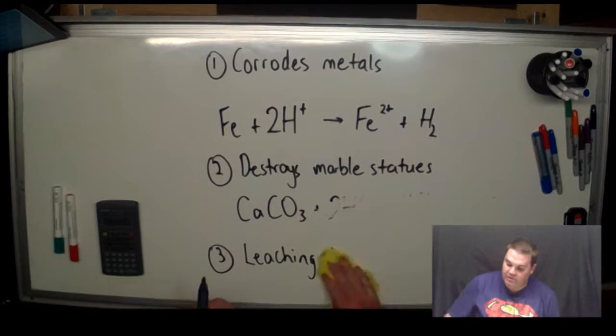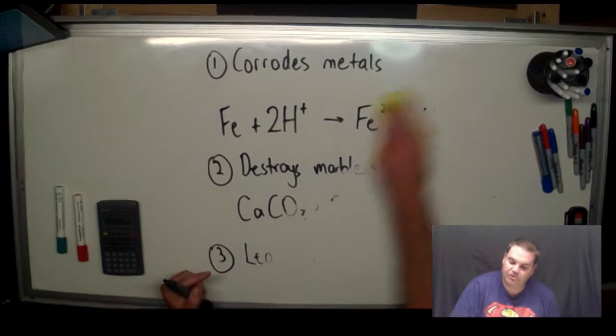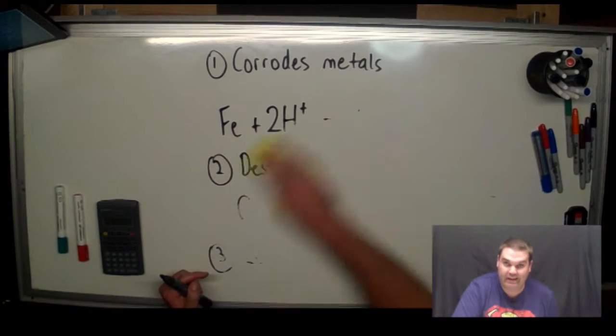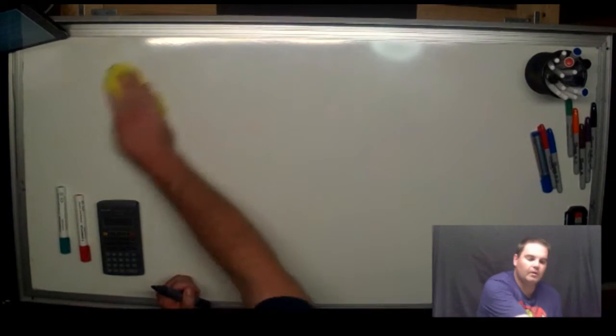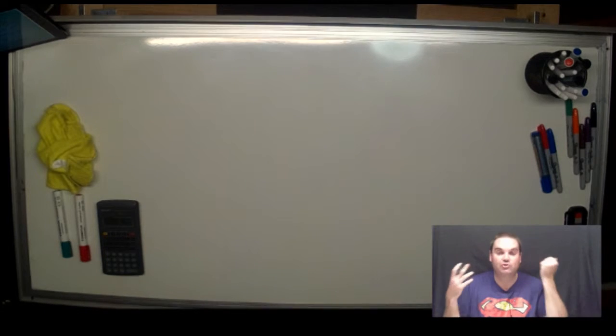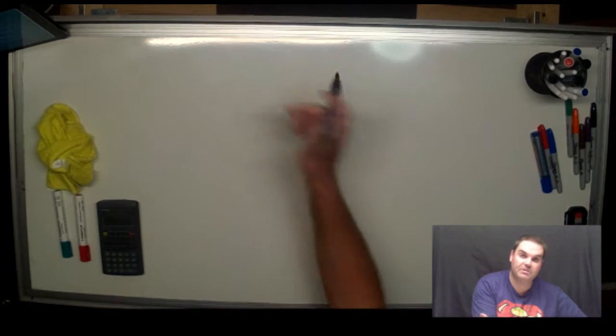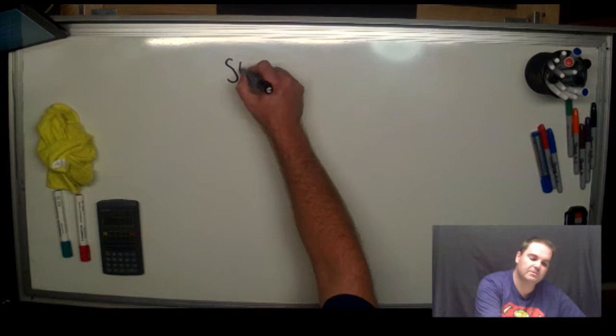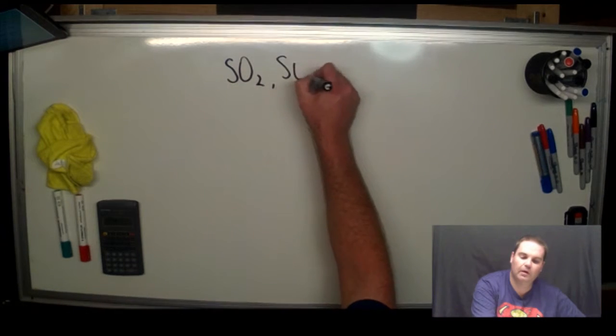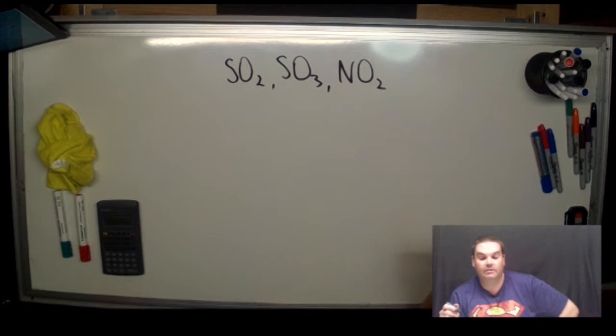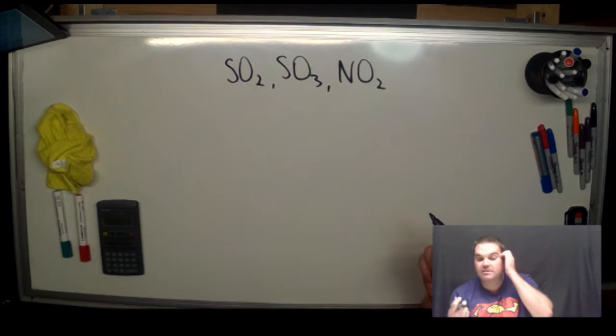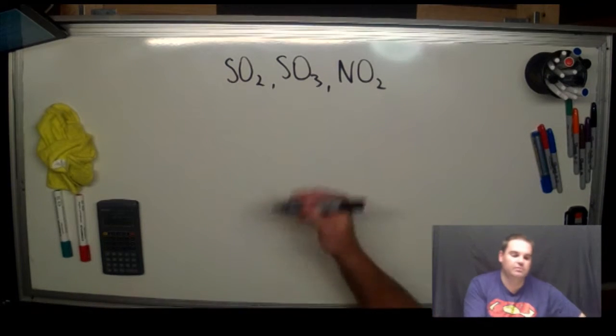So how does acid rain actually form? Well remember it needs to be a pH below 5.6. So we need something that makes a strong acid. So in the atmosphere, these pollutants, sulfur dioxide, sulfur trioxide, nitrogen dioxide. All three of those gases can form very, very strong acids.